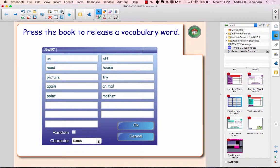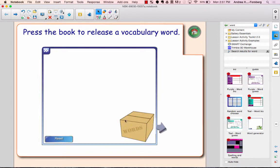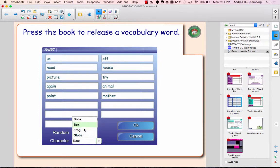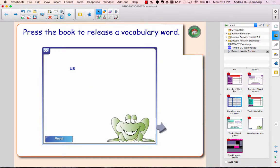You can also choose a different character. So you can choose a box, and you can see the character at the bottom changes, and there are a few other ones. There's a frog and a globe as well. So depending on what you're practicing, they can have different characters there as well.